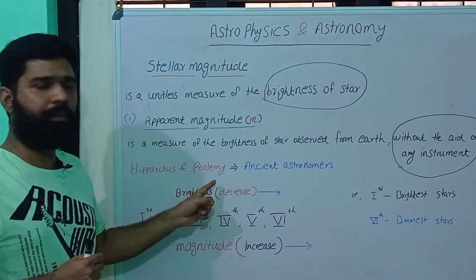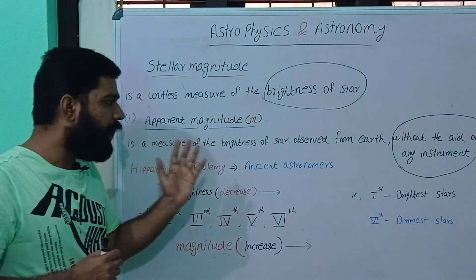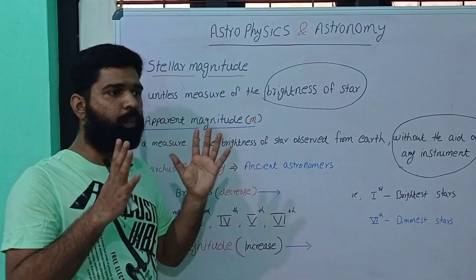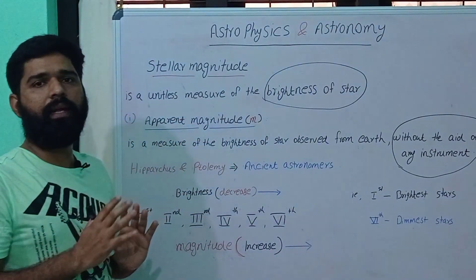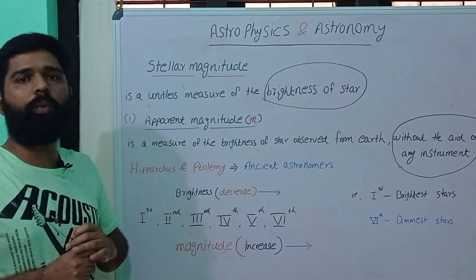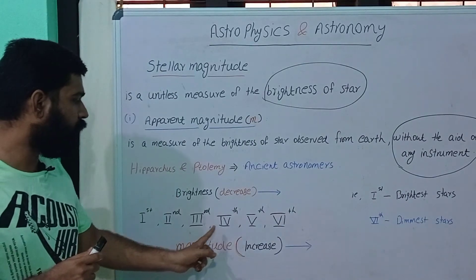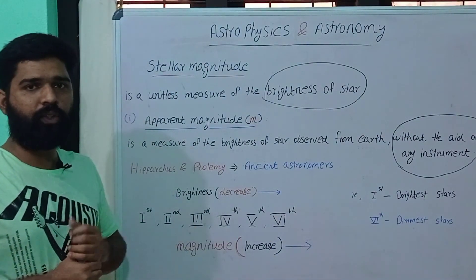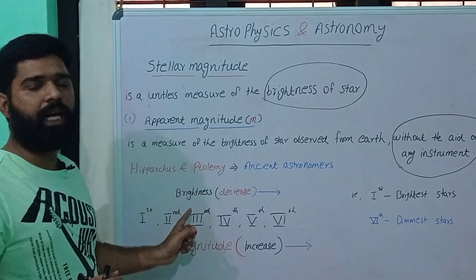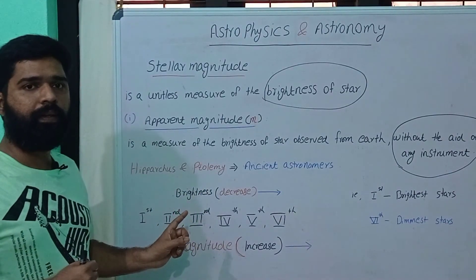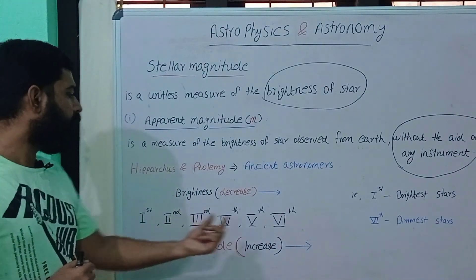Ancient astronomers Hipparchus and Ptolemy observed and analyzed the brightness of stars. They classified stars into groups — first group, second group, third group, fourth group, fifth group, sixth group — based on their brightness.